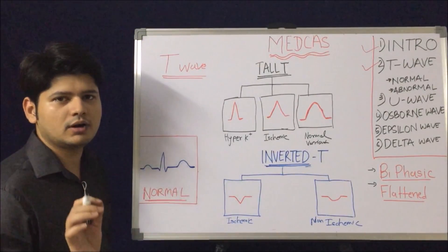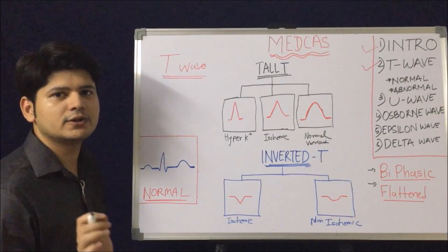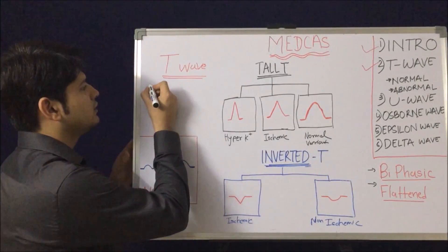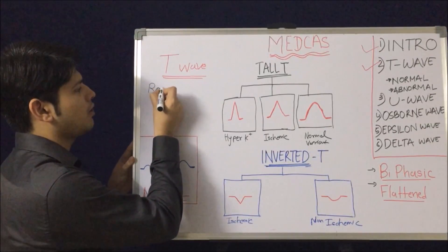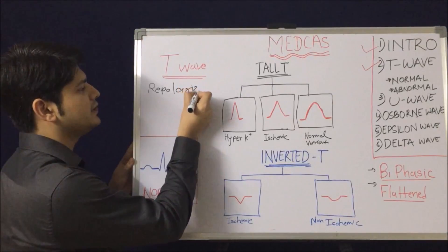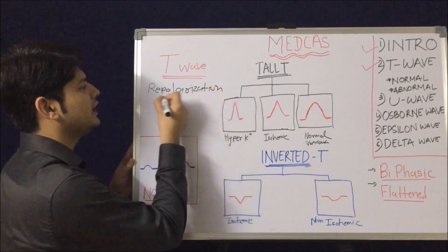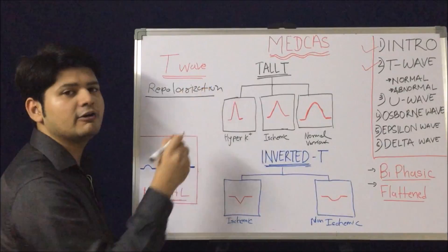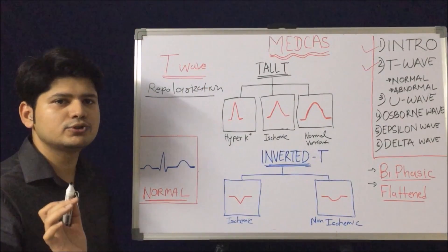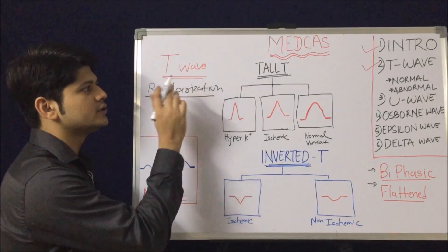Before we start the T wave — normal and abnormal — we should know what is the physiology of the T wave. The T wave is created by repolarization of the ventricle. Any problem with the repolarization will cause abnormality with the T wave. This is the one concept you should remember: repolarization of the ventricle creates the T wave.